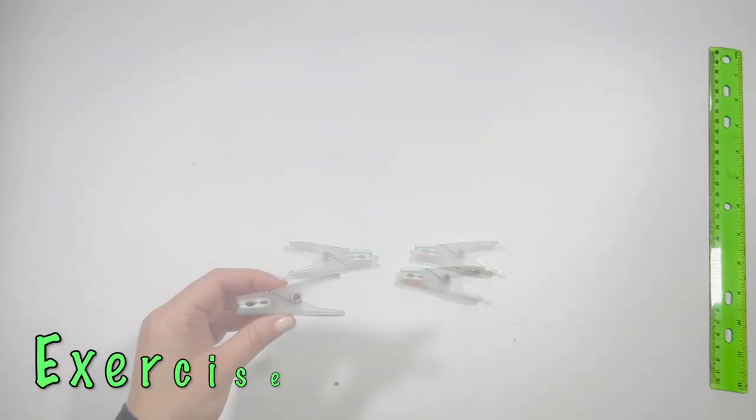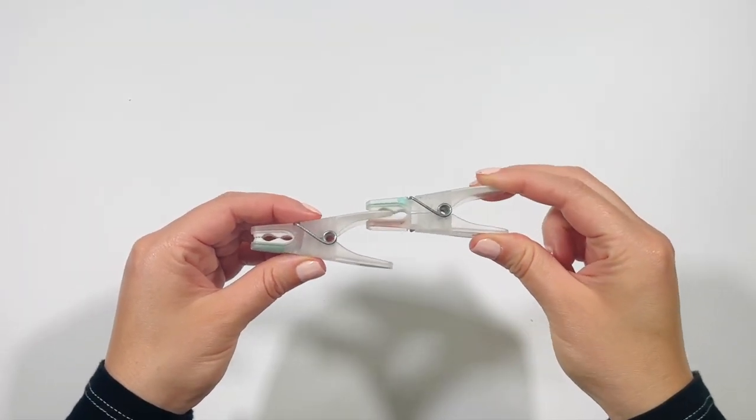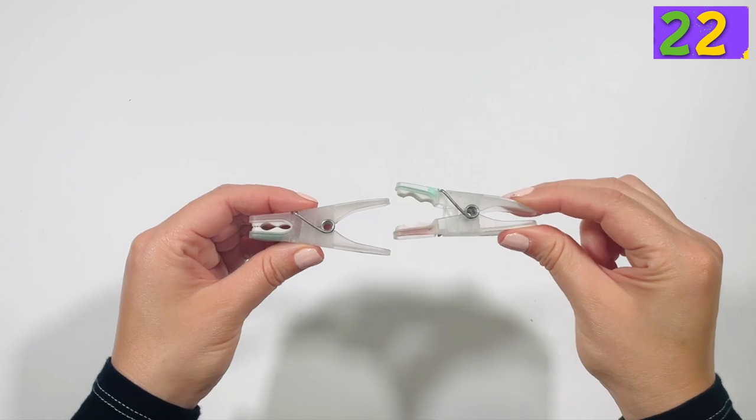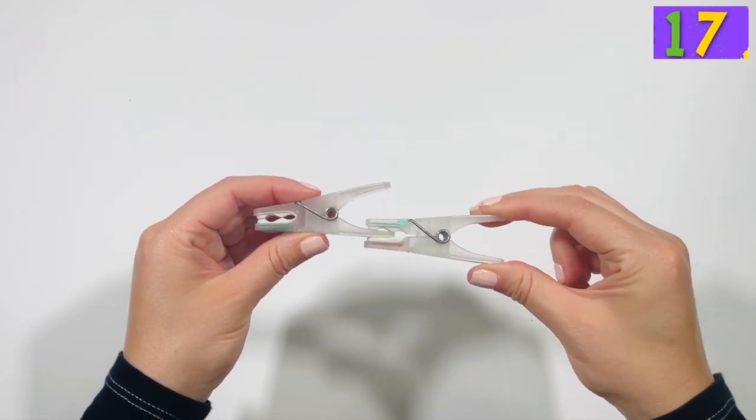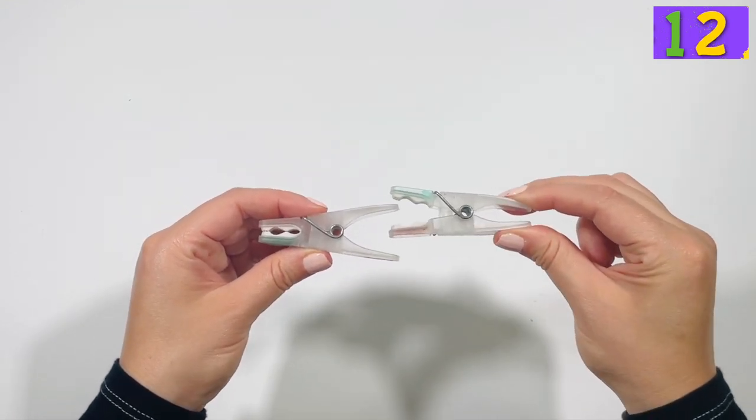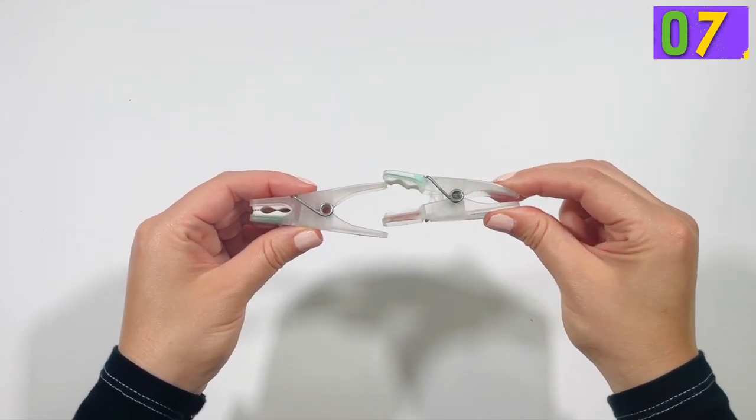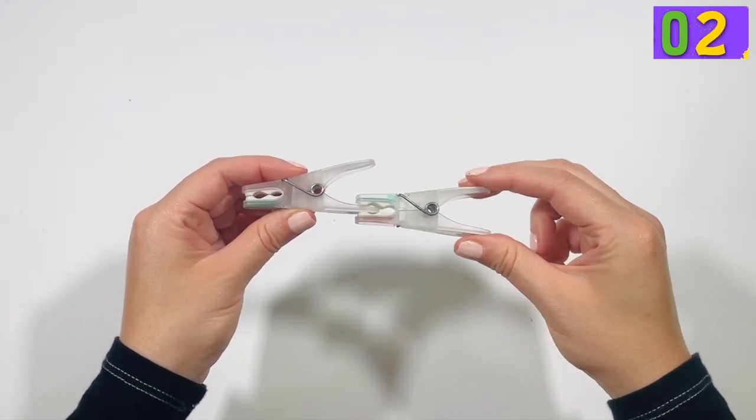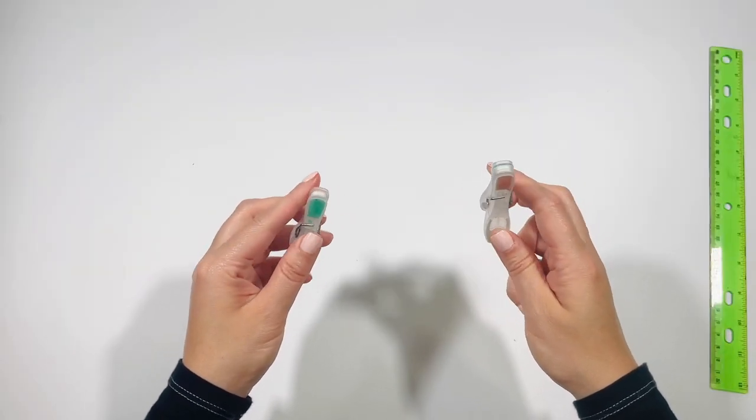Exercise number two. Use your right hand and clip it, get to the top and bottom. Top and bottom. Start! Now flip your cloth pins and do the same with your left hand. Go!